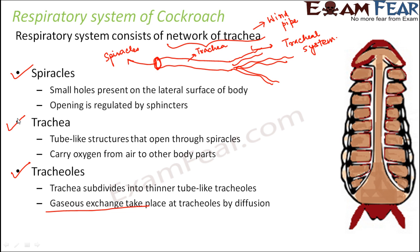The concept is quite similar to what happens in human beings. We have nostrils — they have spiracles. We have trachea — they also have trachea. We have bronchi, bronchioles, and alveoli — they have tracheoles. For us, the exchange of gases takes place at the alveoli; for them, it takes place at the tracheoles.